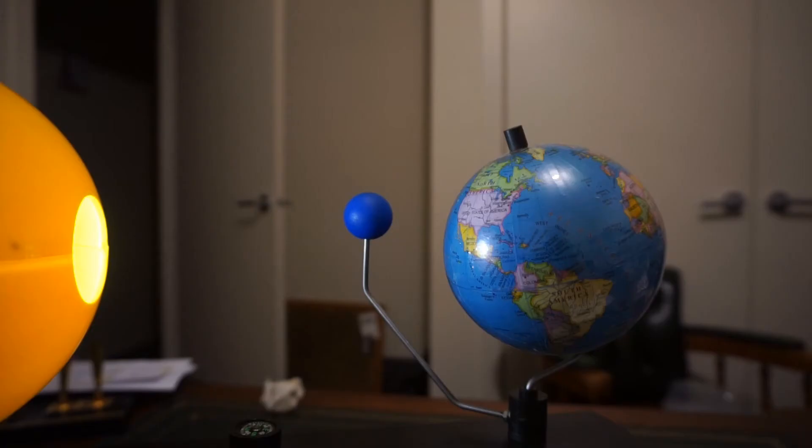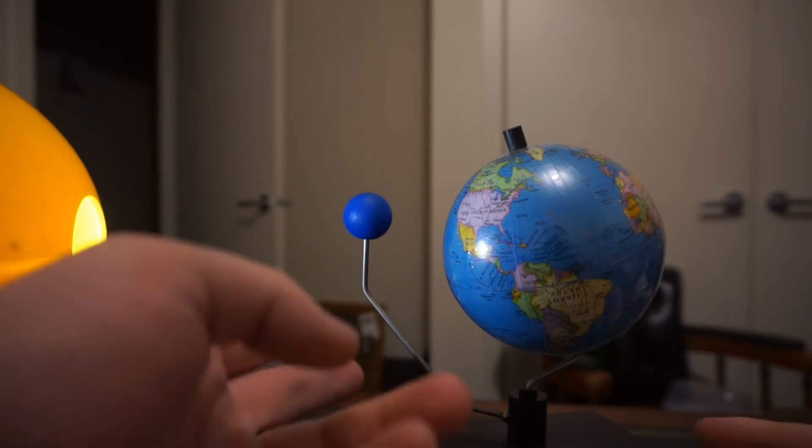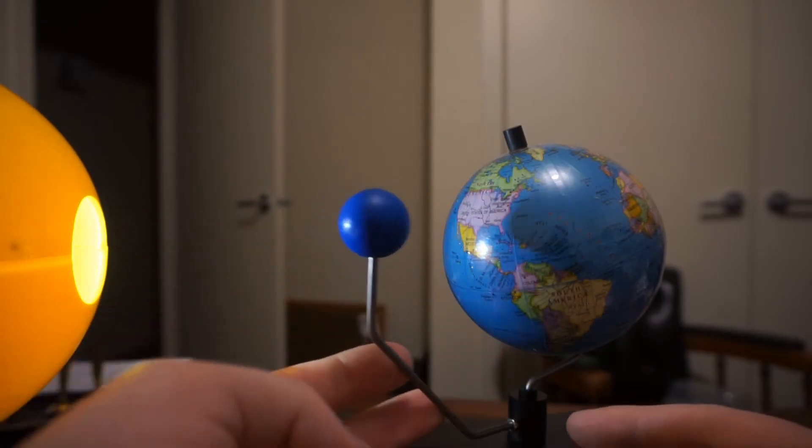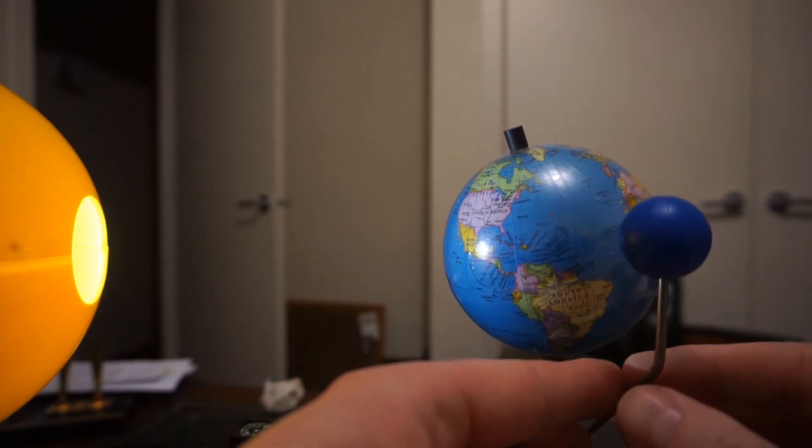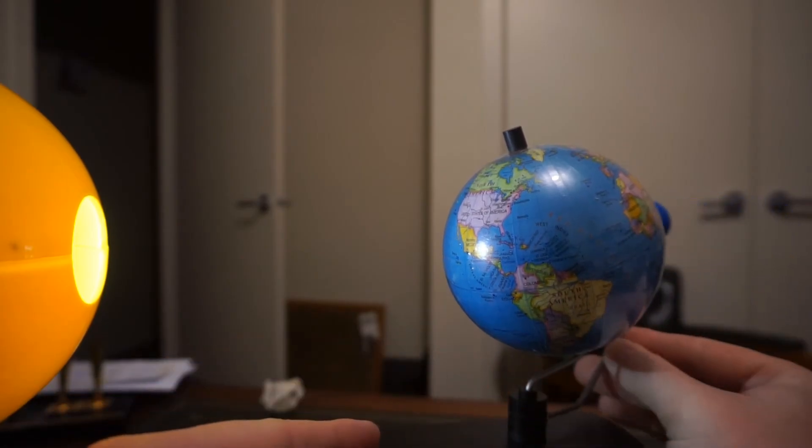The last thing that I haven't spoken about yet is the Moon. The Moon orbits the Earth, and it takes about 27 days for it to do one complete orbit. So every year, it does about 13 laps around the Earth.